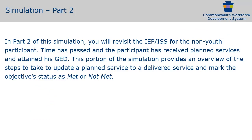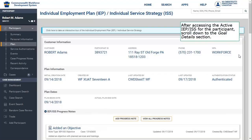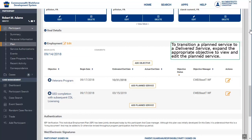In Part 2 of this simulation, you will revisit the IEP-ISS for the non-youth participant. Time has passed and the participant has received planned services and attained his GED. This portion of the simulation provides an overview of the steps to take to update a planned service to a delivered service and mark the objective's status as met or not met.